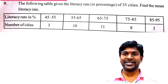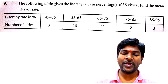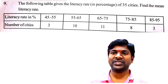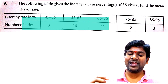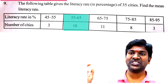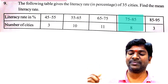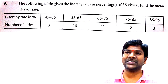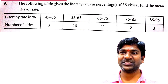Let us take problem 9 from Exercise 14.1 to understand the step deviation method. The question is: the following table gives the literacy rate of 35 cities — find the mean literacy rate. The class intervals for literacy rate (in percentage) are 45–55, 55–65, 65–75, 75–85, and 85–95 with corresponding city counts of 3, 10, 11, 8, and 3. We have to find the mean literacy percentage of 35 cities using step deviation method.